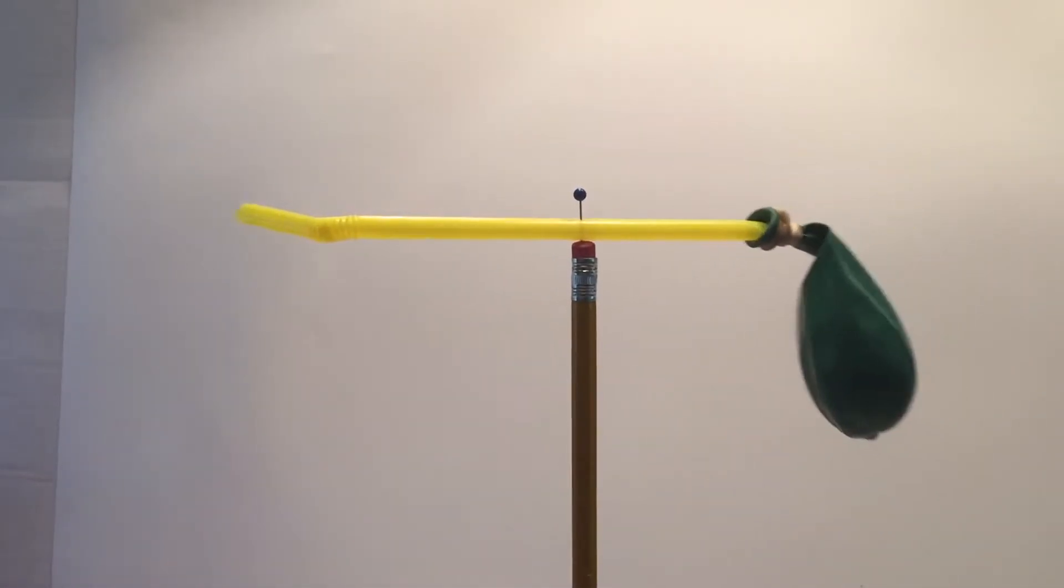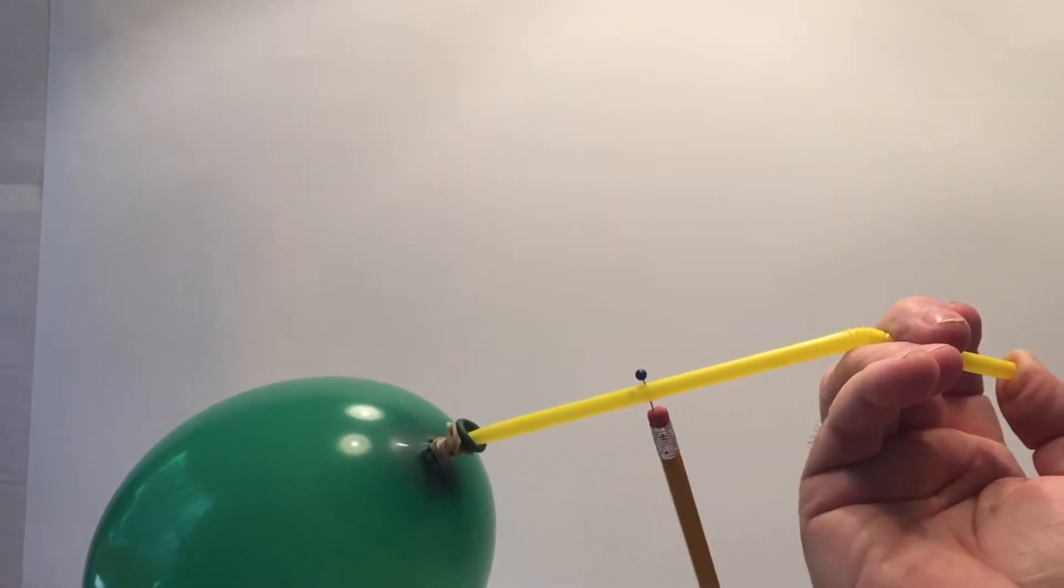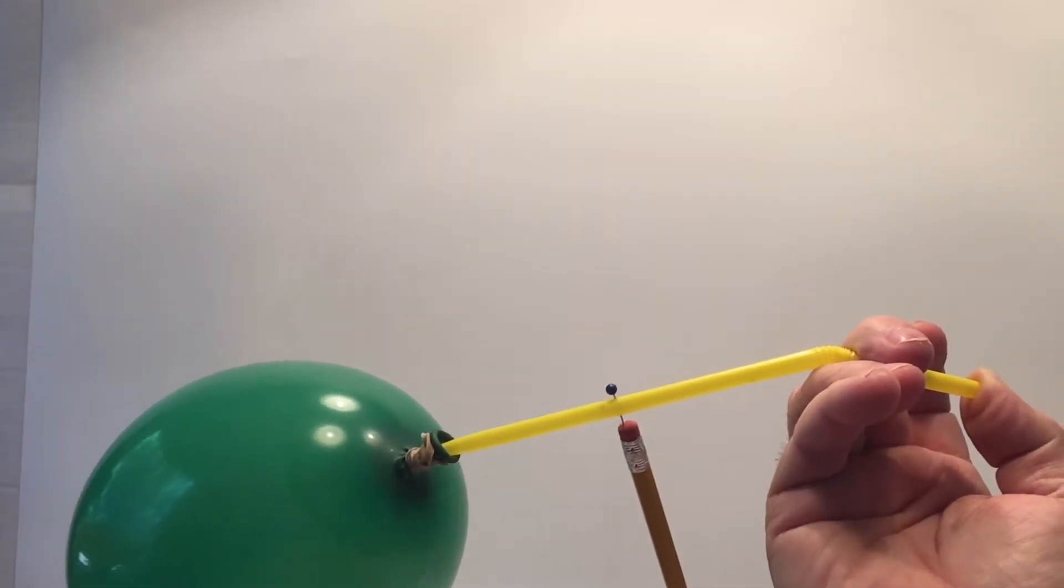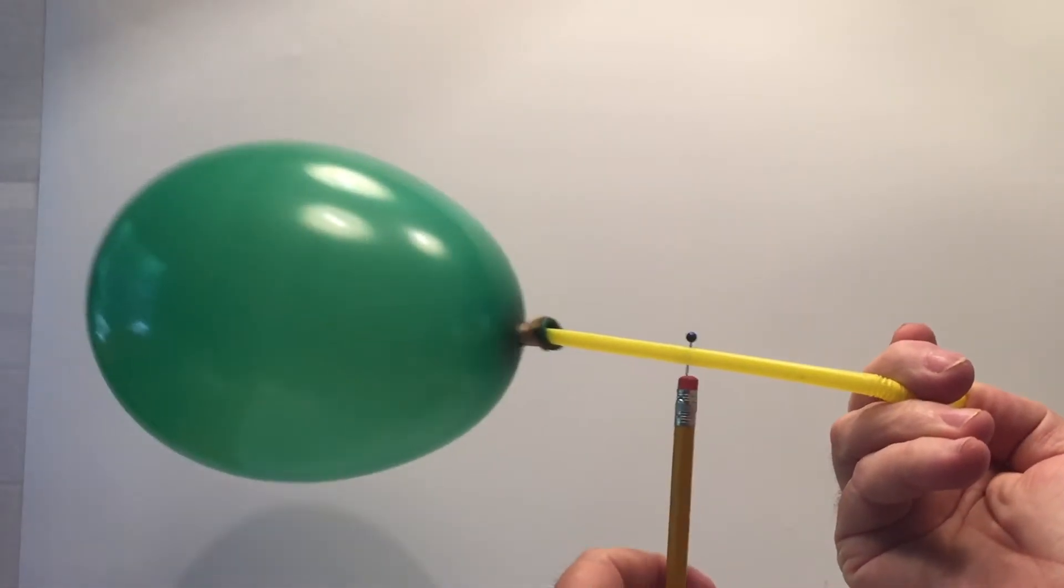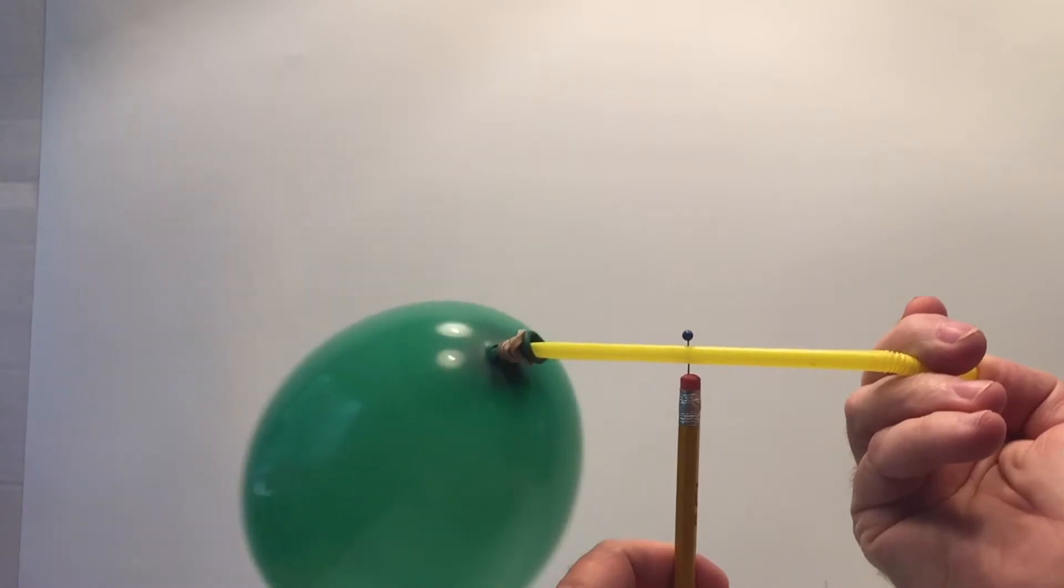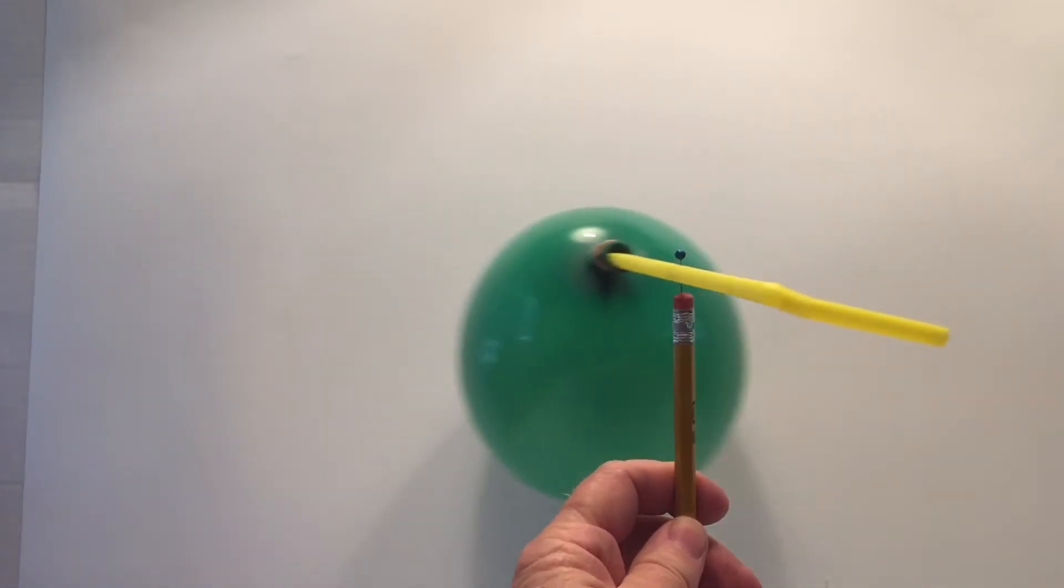The balloon powered pinwheel is an example of Newton's third law of motion, which states for every action there's an equal or opposite reaction. You've blown a balloon before and let it go, and so therefore you've experienced this law by watching the balloon fly around the room as all the air comes out.